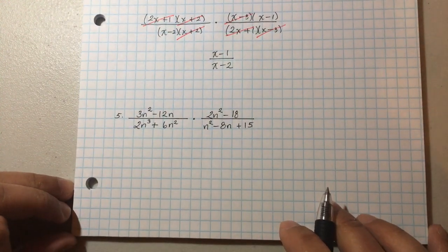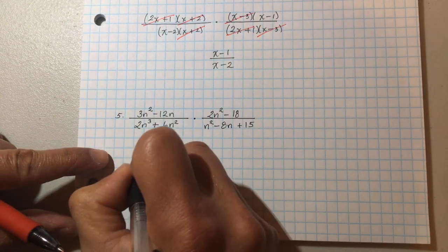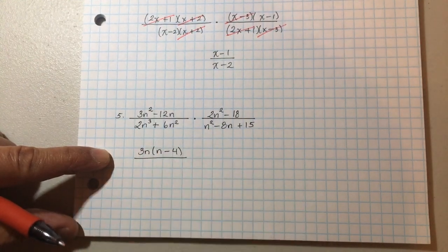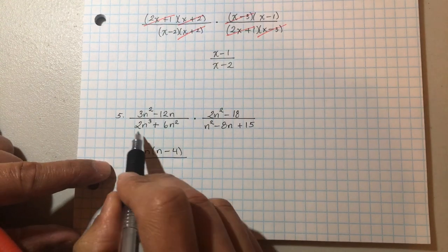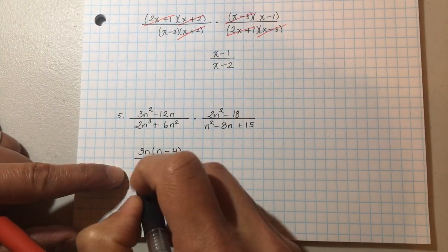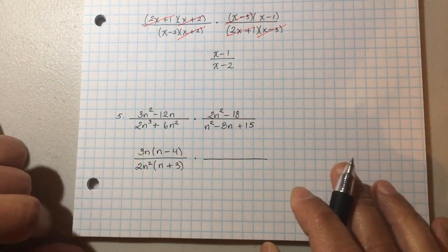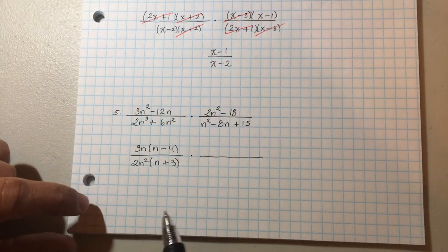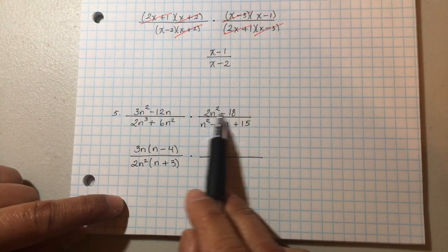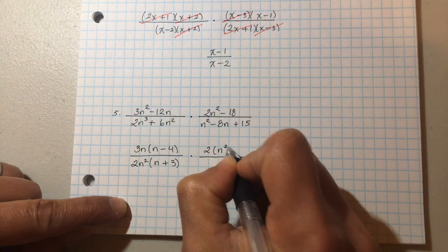Last example. First, look for a common factor — yes, there's a three and an n. So factor out 3n, leaving n minus four. On the bottom, common factor is two and n squared, so factor out 2n squared, leaving n plus three. That's always the first rule of factoring. If you're unsure, check the previous video.